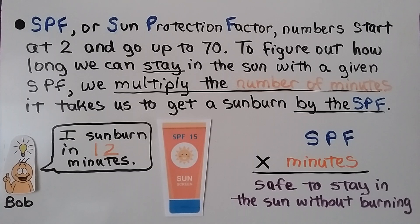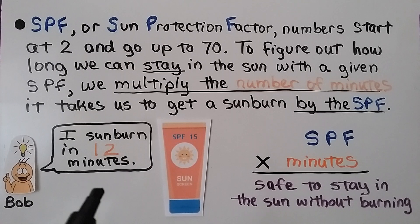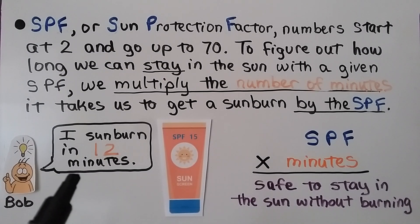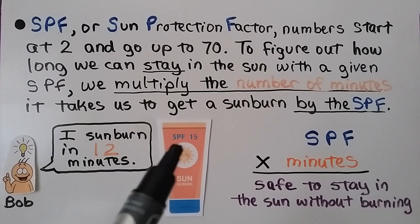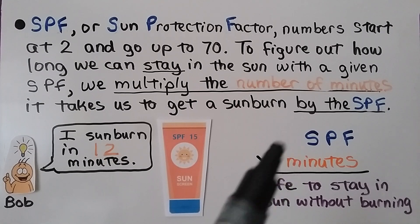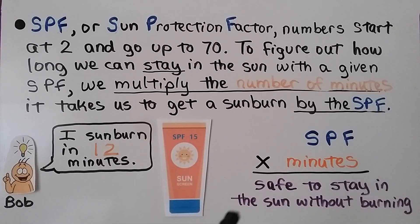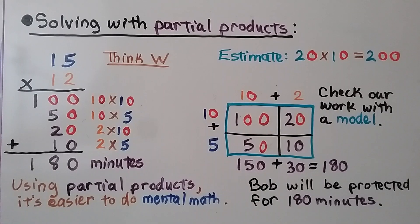SPF, or sun protection factor, numbers start at 2 and go up to 70. To figure out how long we can stay in the sun with a given SPF, we multiply the number of minutes it takes to get a sunburn by the SPF. Bob says he gets a sunburn in 12 minutes. If he uses sun lotion with an SPF of 15, we multiply the SPF times the minutes — 15 times 12 — to find how many minutes he can stay in the sun safely.